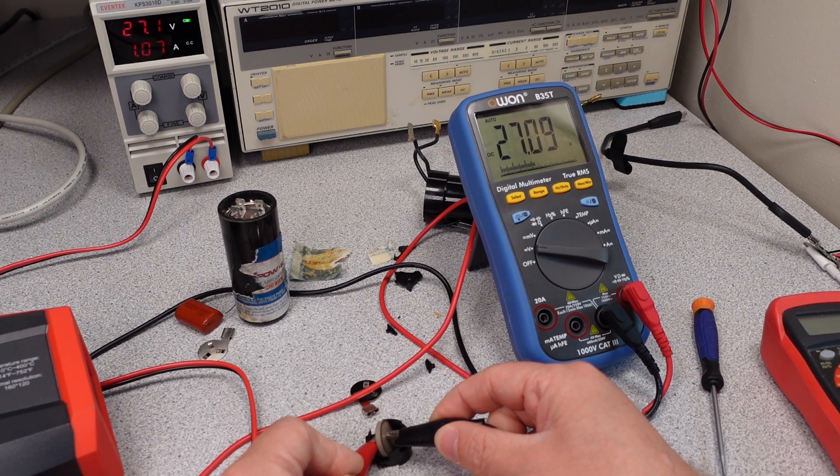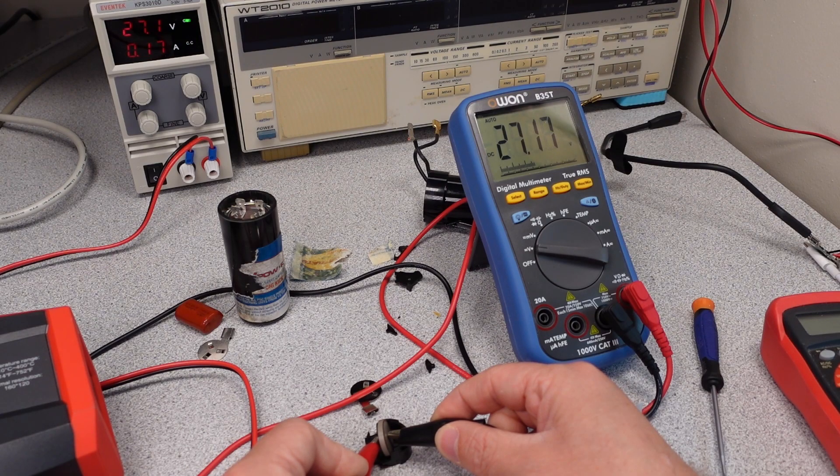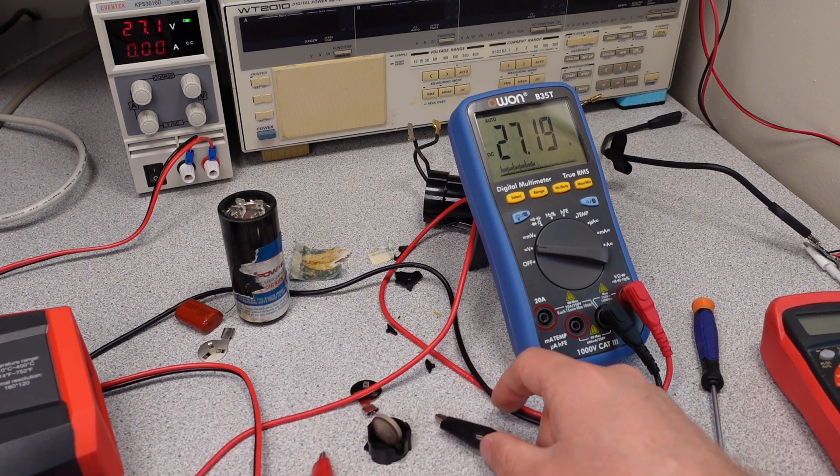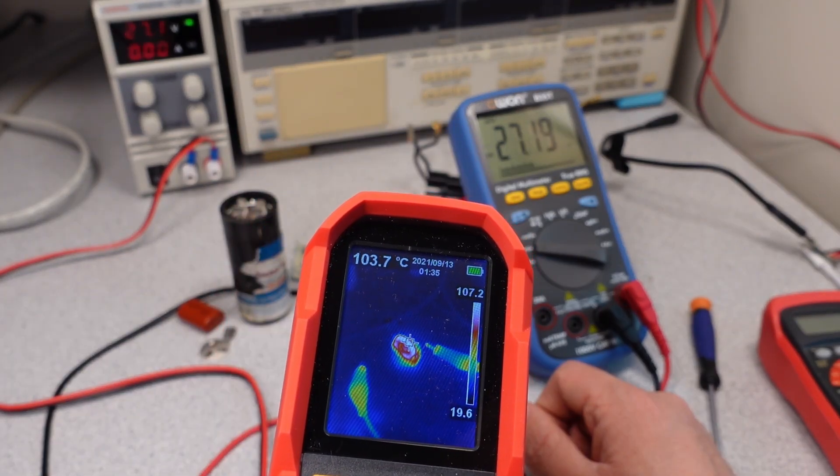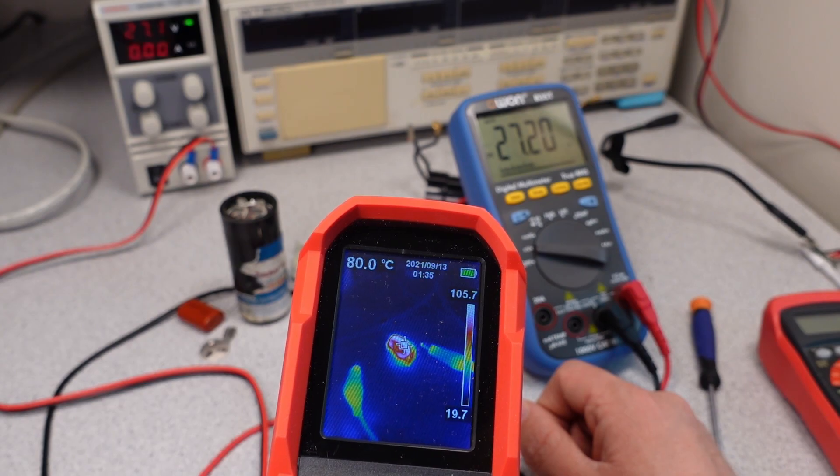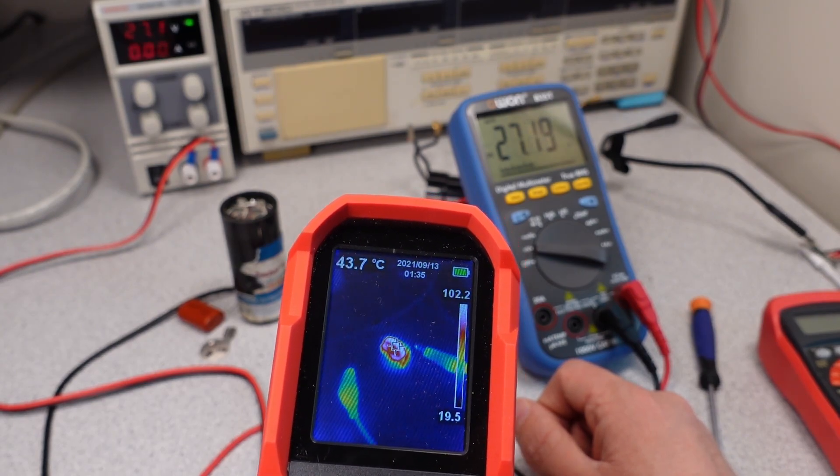So we're drawing about 1 amp right now. What I'm expecting to see is the current start to drop. And take a look at that. The current dropped right down to almost zero amps now. And what we should see is this thing's hot. And there it is. You can see we're about 106, 107 degrees C. So if we cool that back off, we should see a high current. And we'll watch that again.